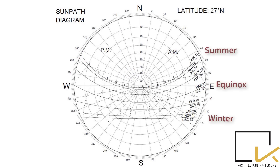At the top is the arc for June, which shows the highest altitude of the Sun. The second arc represents May to July, and the next one is for April to August. The arc for equinox is at the center. The arcs below the equinox denote cooler seasons with lower altitude angles, which indicates lower temperatures.